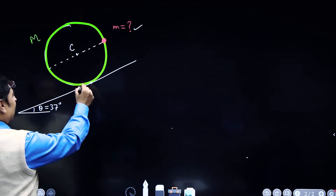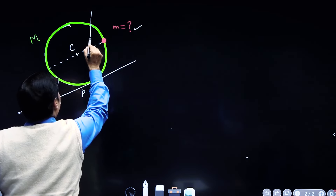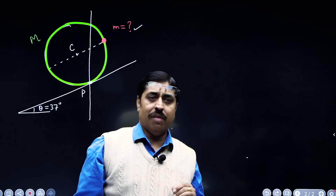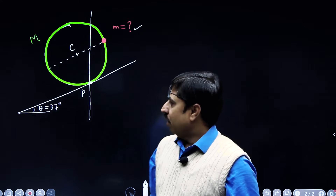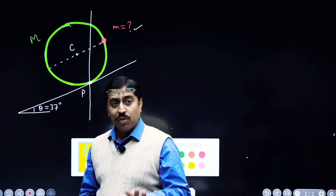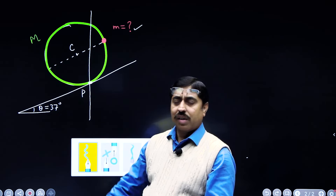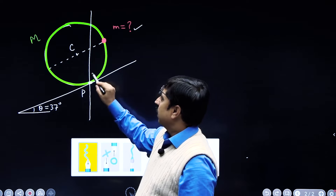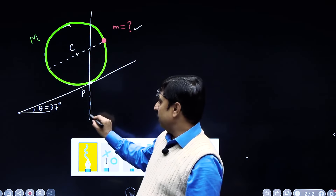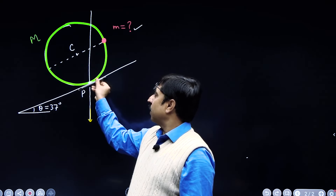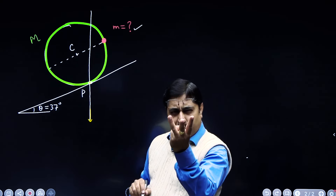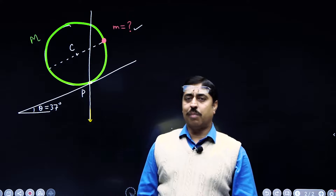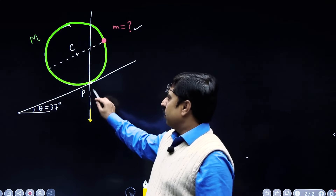I am drawing a vertical line passing through point P — this imaginary vertical line. Point P is the contact point, the point at which the ring is in contact with the inclined plane. If the center of mass of the system lies on this vertical line, then this whole thing will remain in equilibrium. It is easy to see because the Mg force will be along this line, and the normal reaction and friction will definitely pass through this point. So all three forces — Mg, normal reaction, and friction — will pass through this particular point and their net torque about this point will become zero.